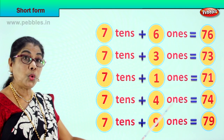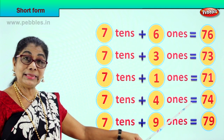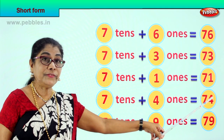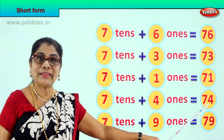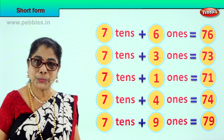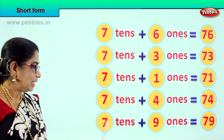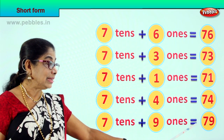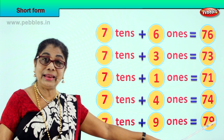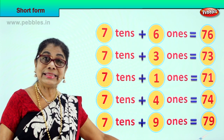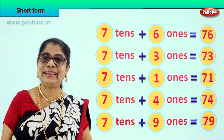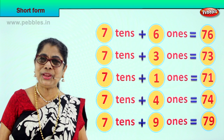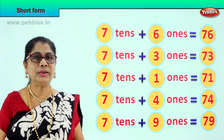7 tenths plus 4 ones is equal to? 7 and 4? 74. 7 tenths plus 9 ones is equal to? 7 and 9? 79. Did you enjoy? Good.